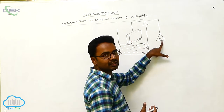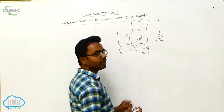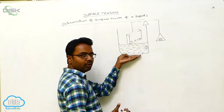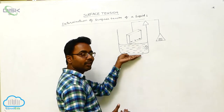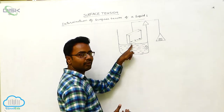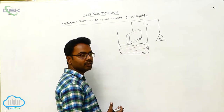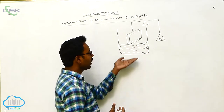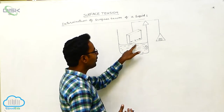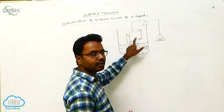The weight placed in the pan is balancing the rectangular plate. Now this vessel is lifted up until the liquid surface just touches the rectangular plate.